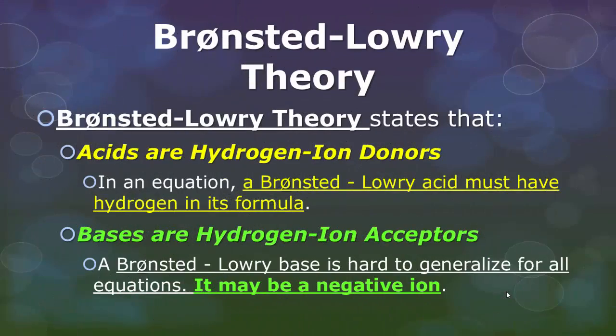Bronsted-Lowry theory states that when you have an acid, it's going to be a hydrogen ion donor which means it's going to release a hydrogen ion when it dissociates in water. Bases are hydrogen ion acceptors which means that they're going to absorb the hydrogen ion that's in the water. To identify these guys all you have to do is just look at the formula. Notice what your reactants are, then notice what your products are, and the changes that you see will identify which is going to be your Bronsted-Lowry acid and which one is going to be your Bronsted-Lowry base.